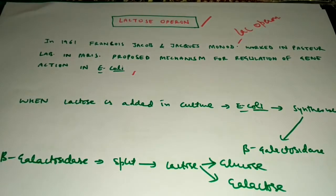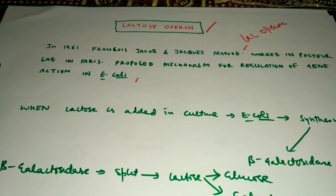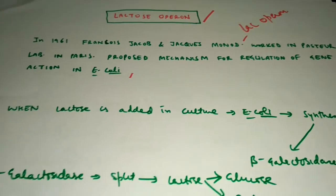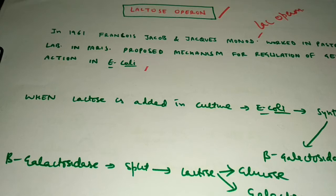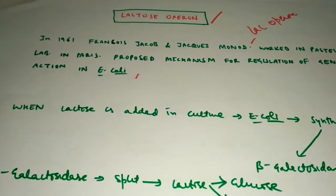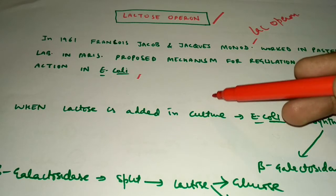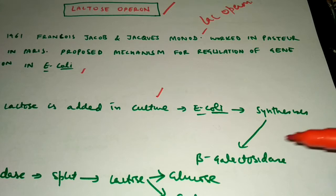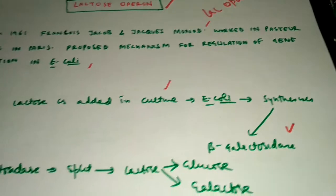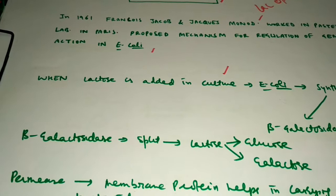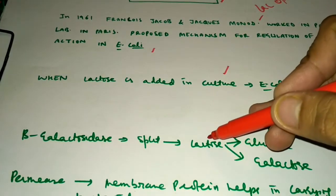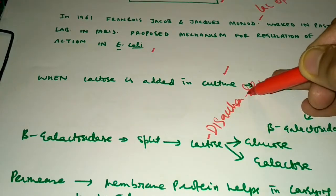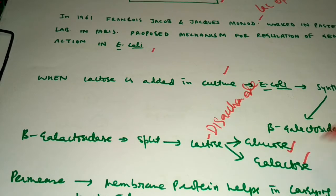Here, lactose acts as an inducer. An inducer is a substance whose presence enhances a particular action. Both scientists noted that when lactose is added, E. coli bacteria synthesize beta-galactosidase. Beta-galactosidase is a very important enzyme that splits lactose, a disaccharide, into its monomers — glucose and galactose.